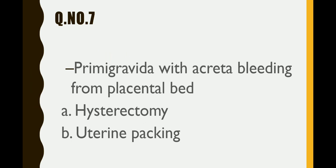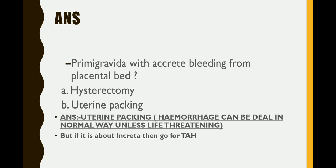Question number 7: a primigravida with placenta accreta is having bleeding from the placental site. Options include hysterectomy and uterine packing. Since she is a primigravida, we should go for conservative management rather than hysterectomy, so uterine packing is preferred. Important note: if the diagnosis were increta instead of accreta, even in a primigravida, hysterectomy (TH) would be required. But here with accreta, uterine packing is the answer.